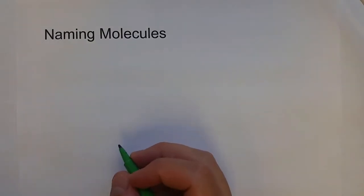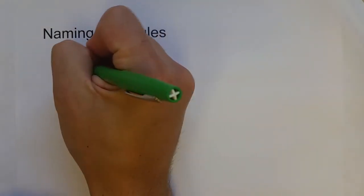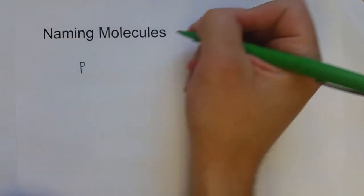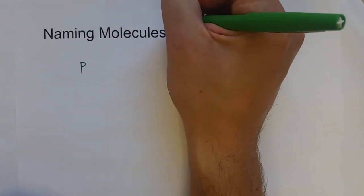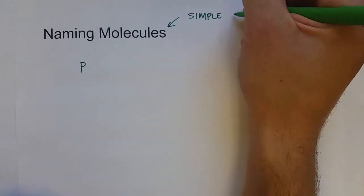When it comes to naming molecules, we have to be very specific because we can't figure out the formula based on the charge because they don't have charges. The general mechanism for naming molecules, and we will focus on just simple binary molecules, meaning just two different elements.